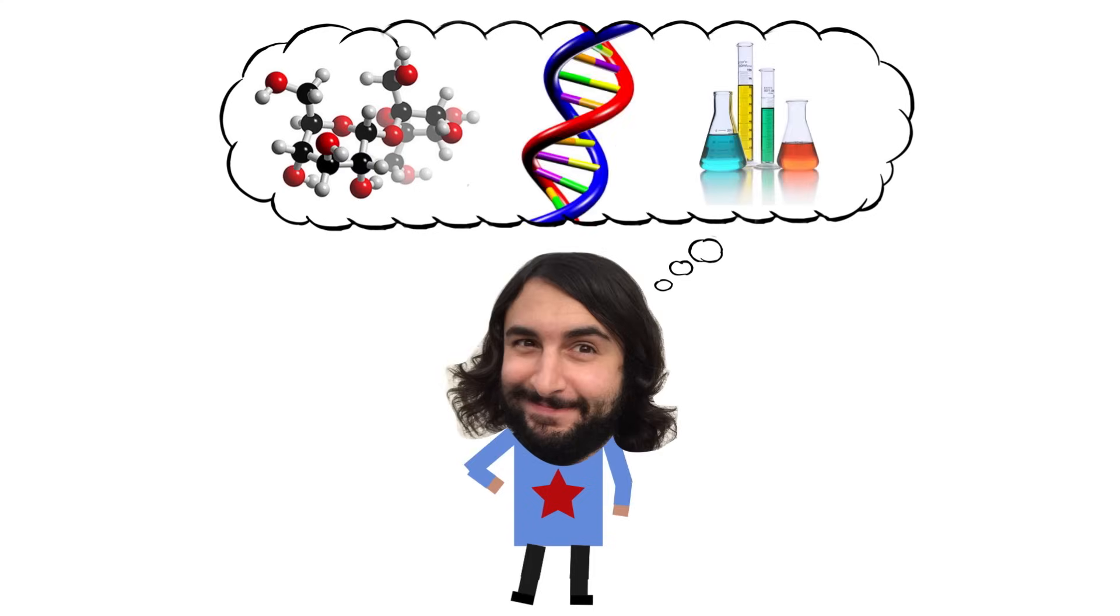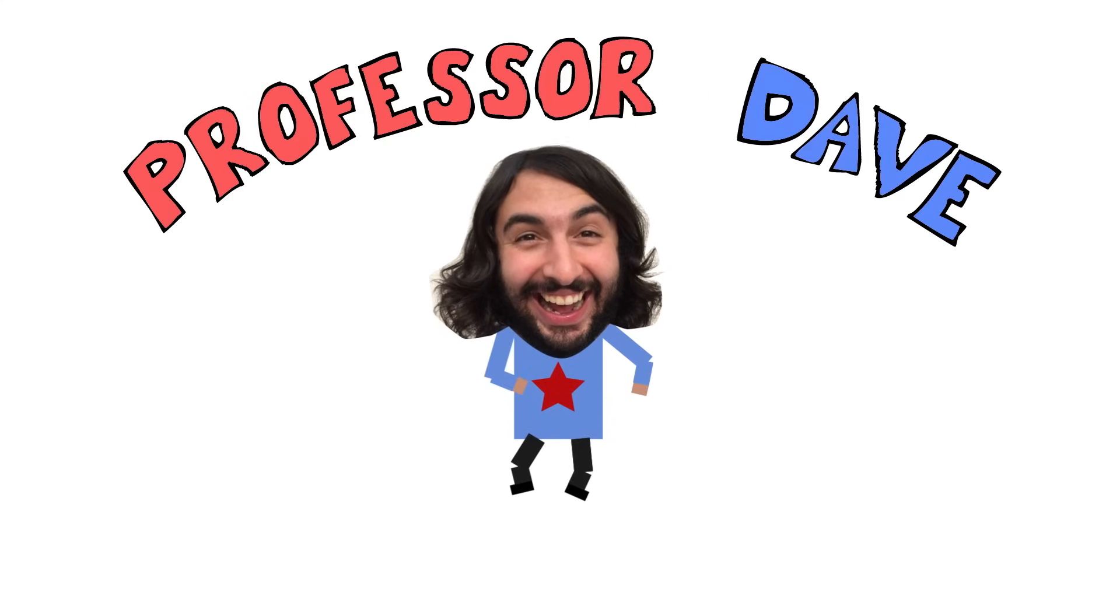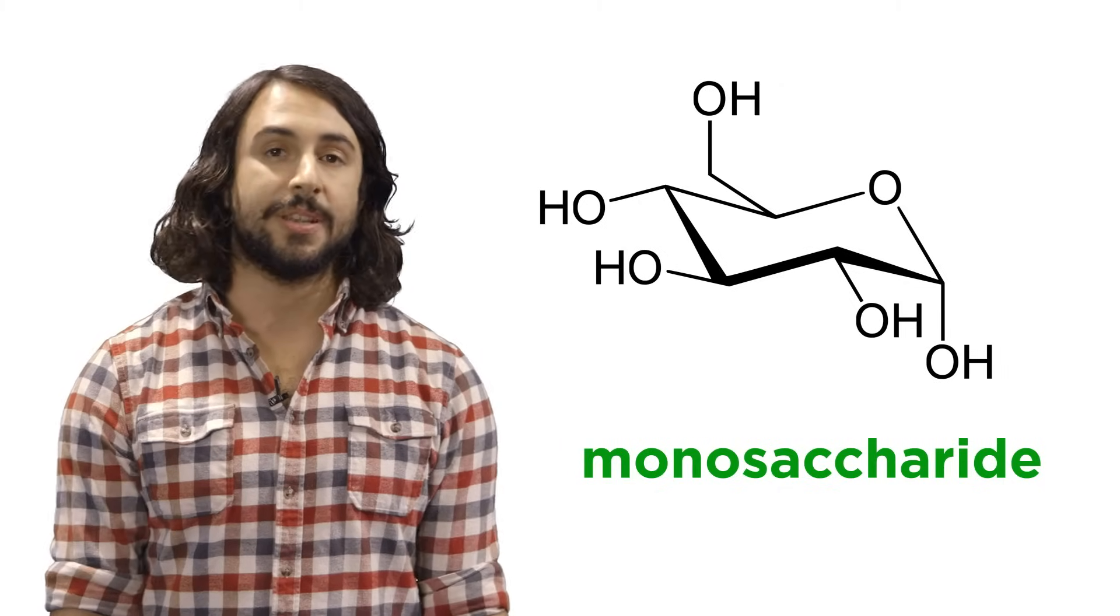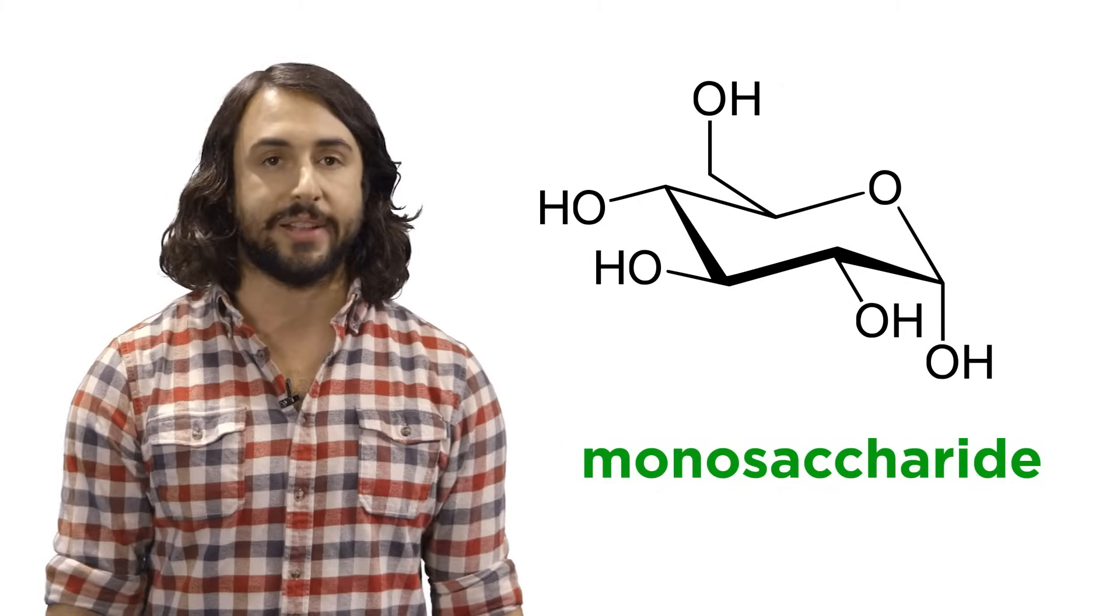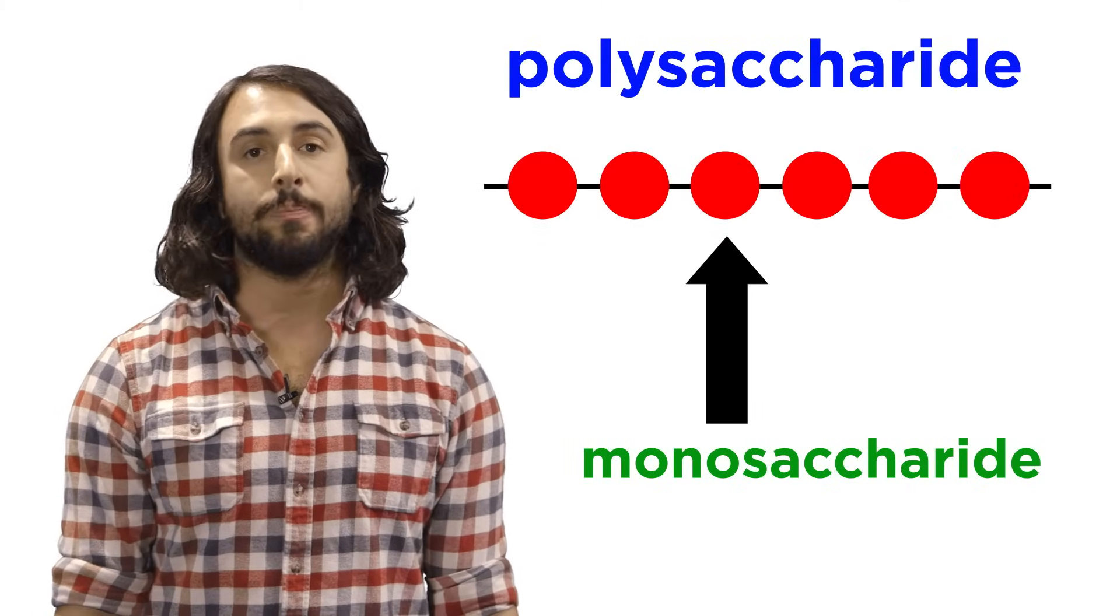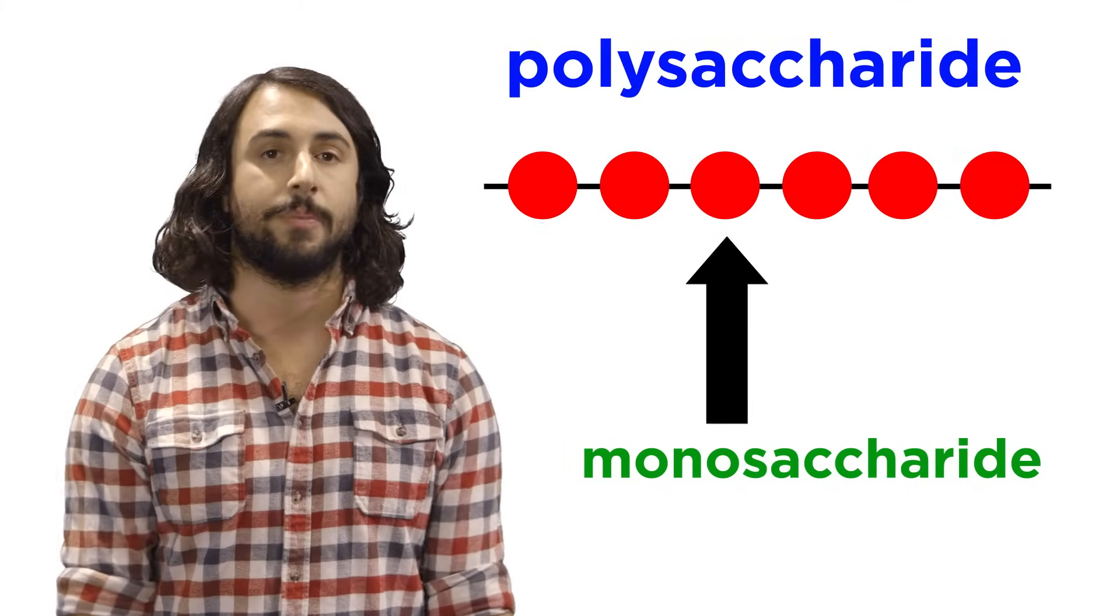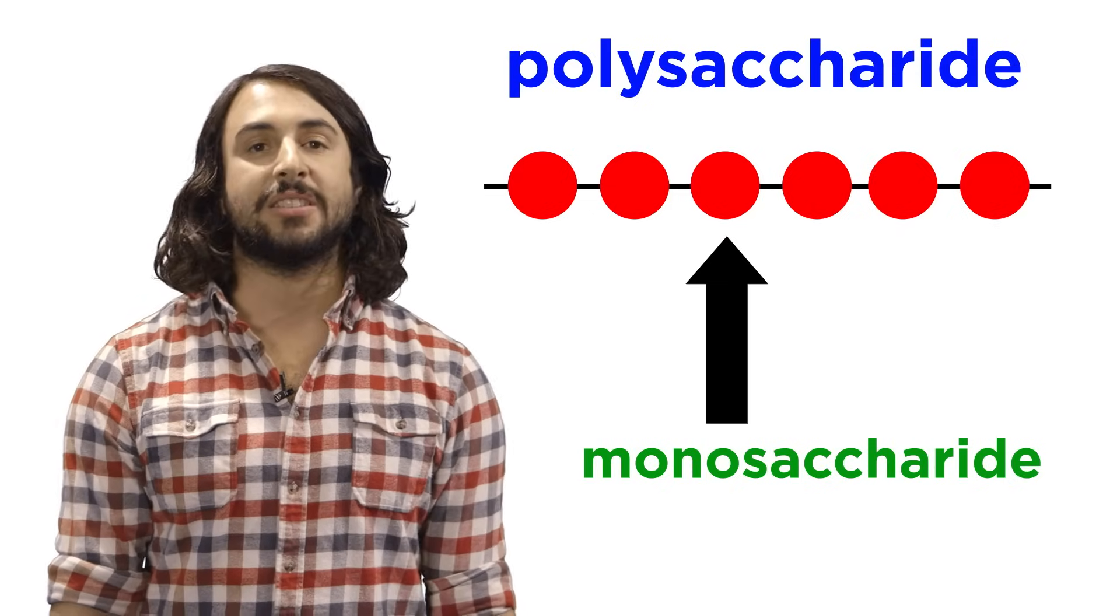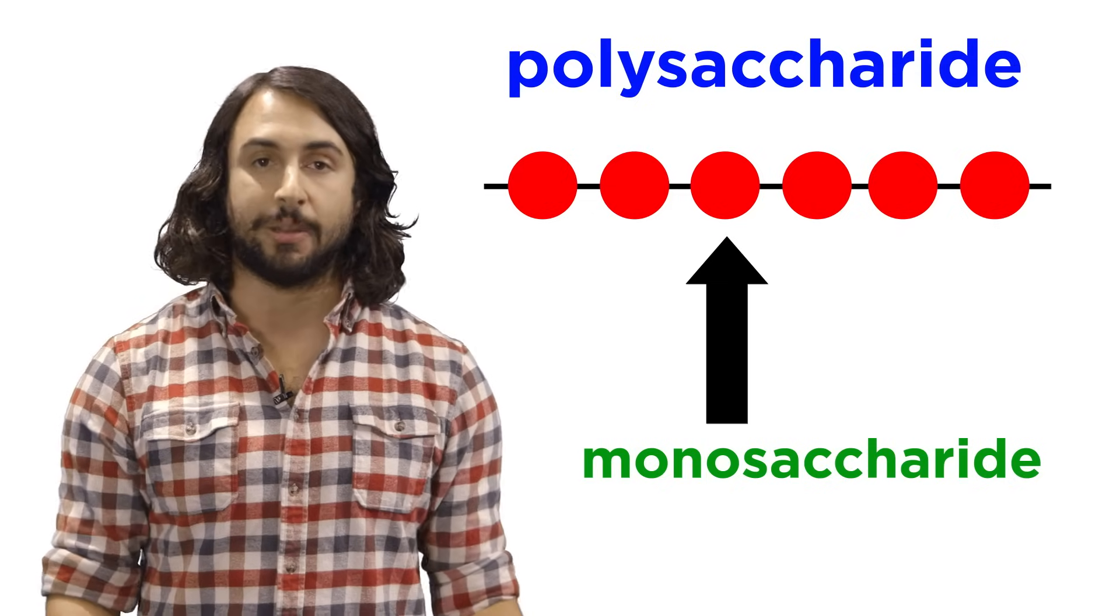Hey guys, it's Professor Dave, let's discuss polysaccharides. Carbohydrates include simple sugars like monosaccharides, but they also include polysaccharides, which are long polymers of these simple sugars. So we need to understand the way they polymerize, as well as certain characteristics of the resulting polymers.